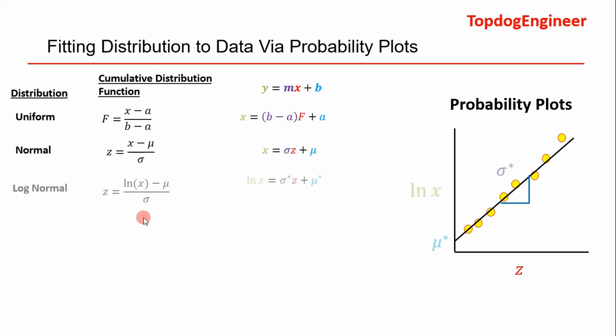For log-normal, this is your cumulative distribution function. Rearrange it in the form of y equals mx plus b. I'm sorry, but this should be sigma star, this should be mu star too. You can see here you get a straight line and you can run linear regression on your data by plotting the natural log of x versus z and get your sigma star, your mu star, and you've modeled it.